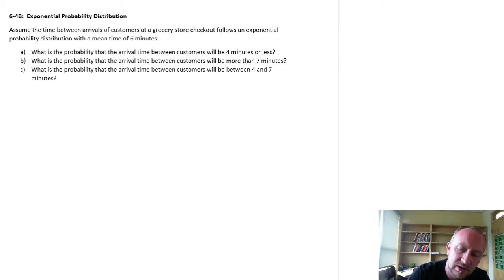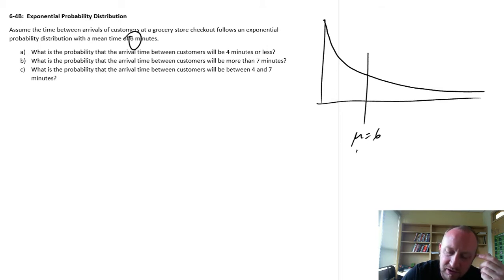Here's what our distribution looks like. We have a mean of six, somewhere over here. Similar to the Poisson distribution, the standard deviation is always the same as the mean. Our first step in these types of problems is we need to figure out what is that cumulative probability function.